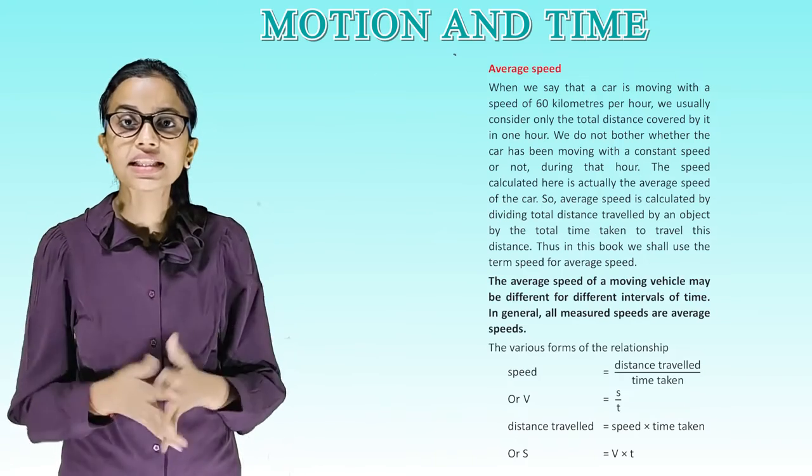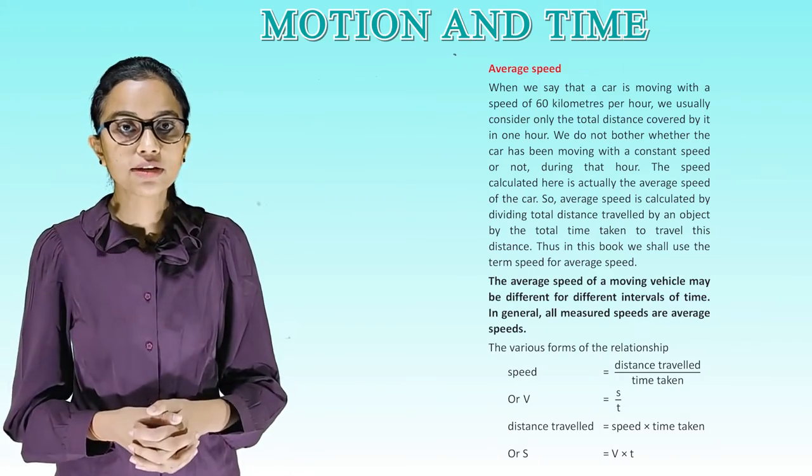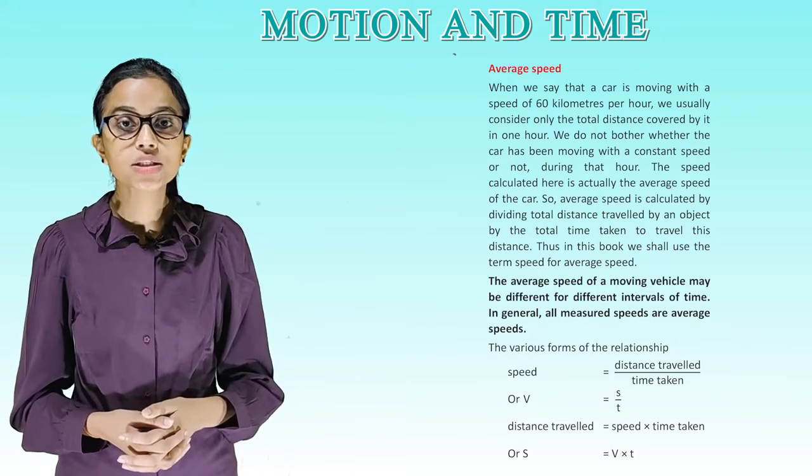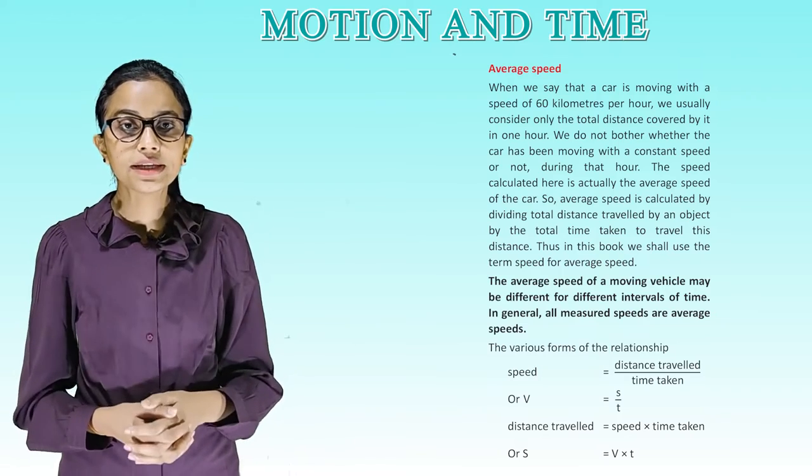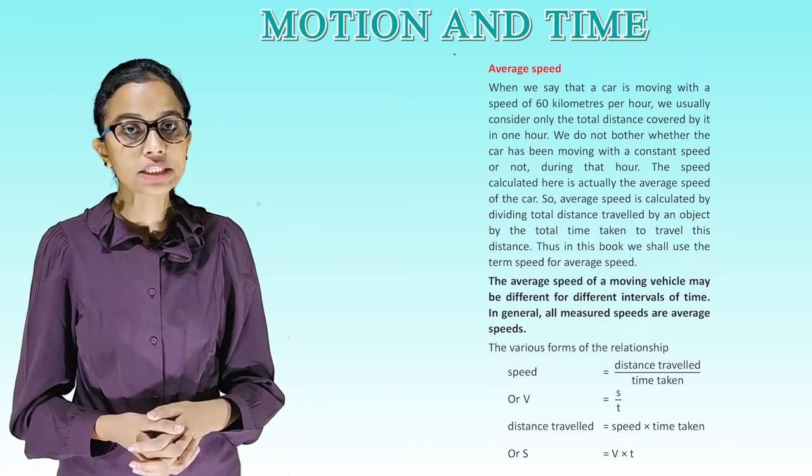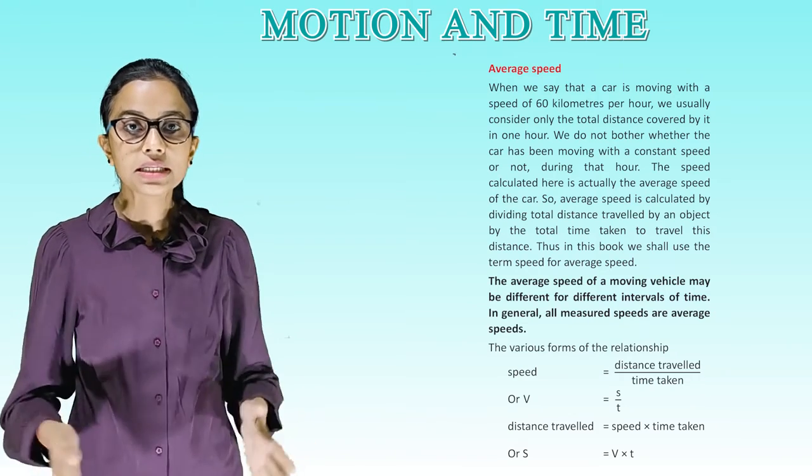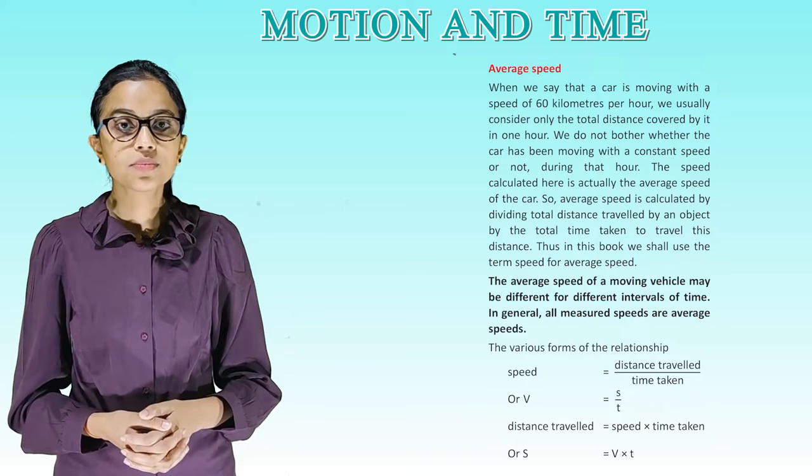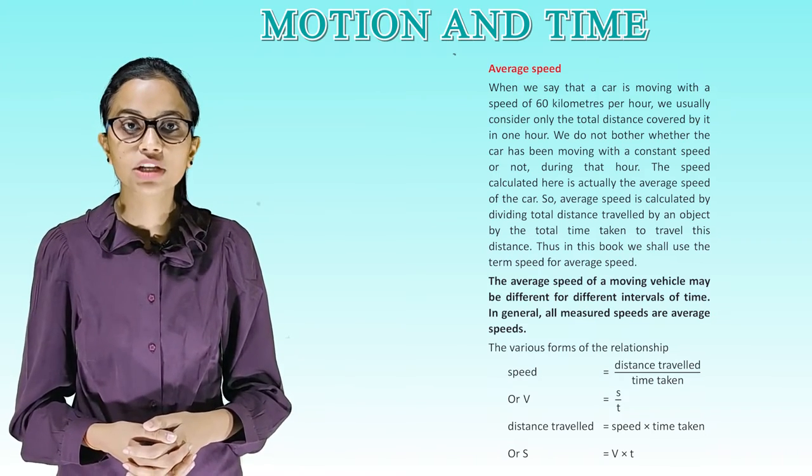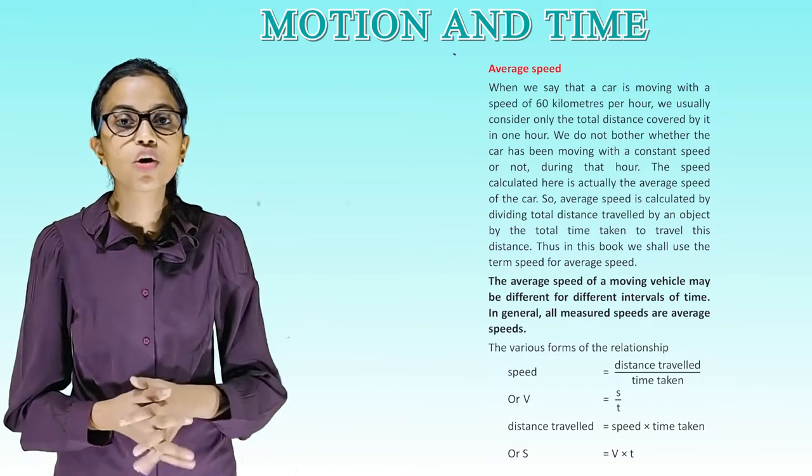Average speed. When we say that a car is moving with a speed of 60 kilometers per hour, we usually consider only the total distance covered by it in one hour. We do not bother whether the car has been moving with a constant speed or not. During that hour, the speed calculated here is actually the average speed of the car. So, average speed is calculated by dividing total distance traveled by an object by the total time taken to travel this distance. Thus, in this book, we shall use the term speed for average speed. The average speed of a moving vehicle may be different for different intervals of time. In general, all measured speeds are average speeds.